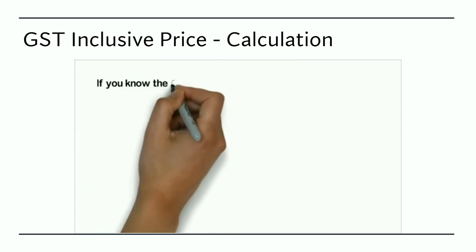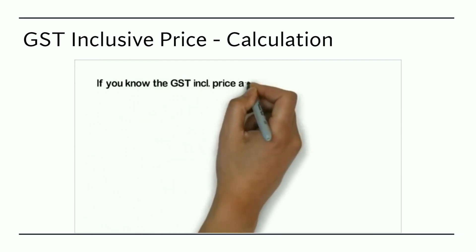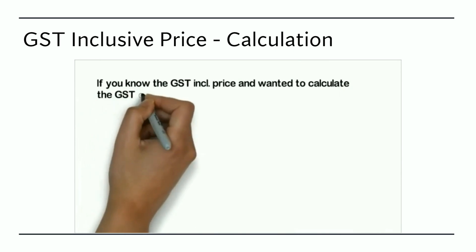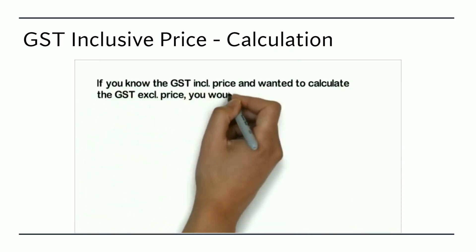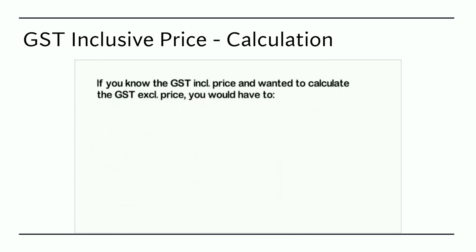If you know the price inclusive of GST and want to calculate the GST exclusive price going backwards, you would now need to divide the price inclusive of GST by 1 plus GST.